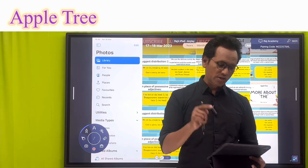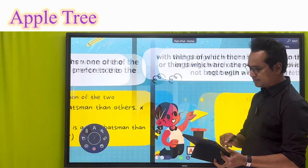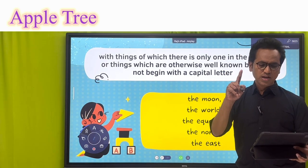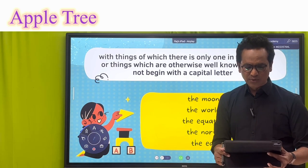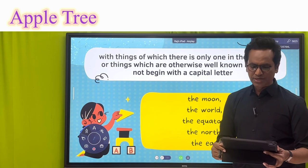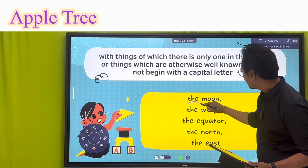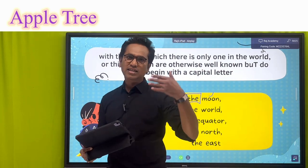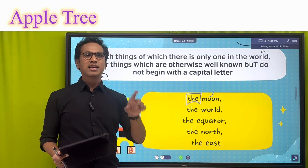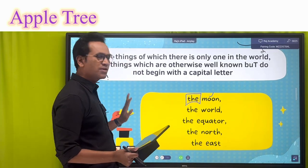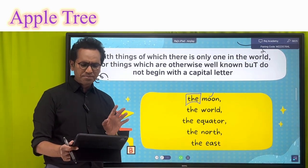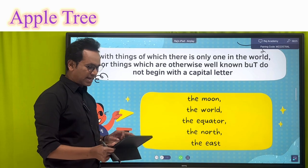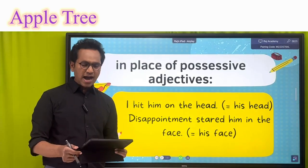The next usage: 'the' is used with things of which there is only one in the world, provided they do not begin with a capital letter. For example: the moon, the earth, the Taj Mahal, the equator, the north, the east. For things that are unique in the world, we use 'the' before them, but they should not begin with a capital letter.